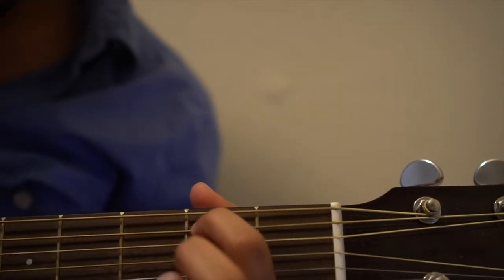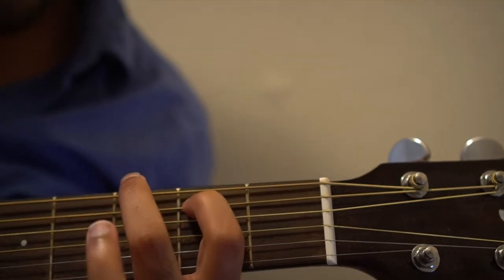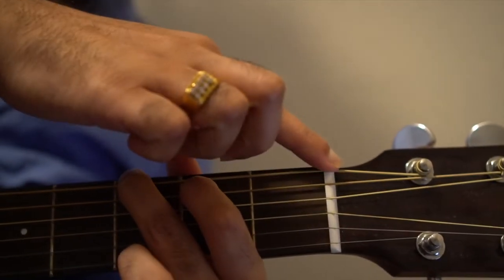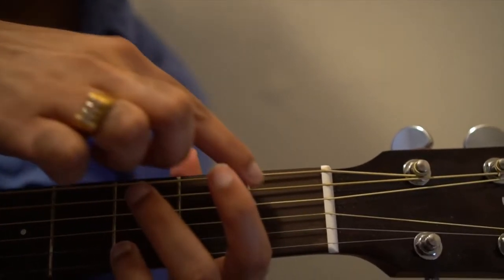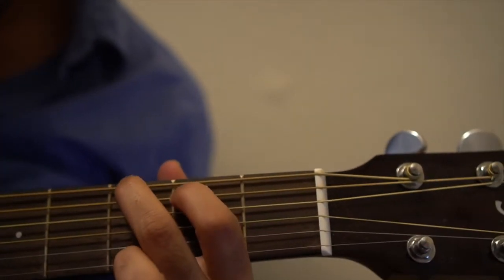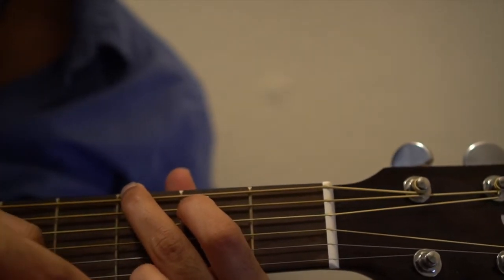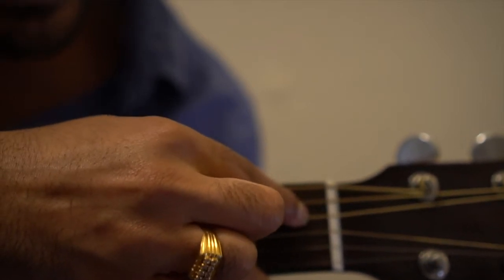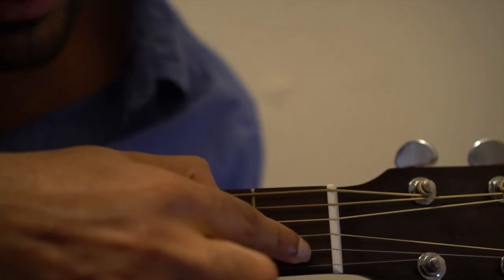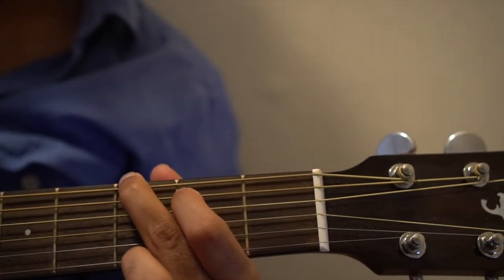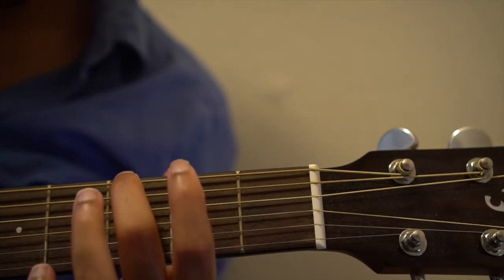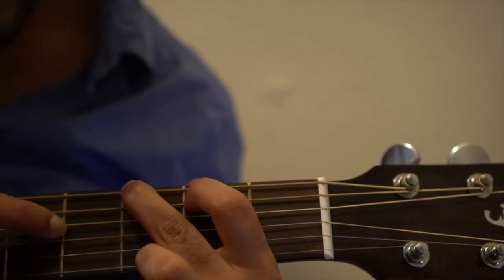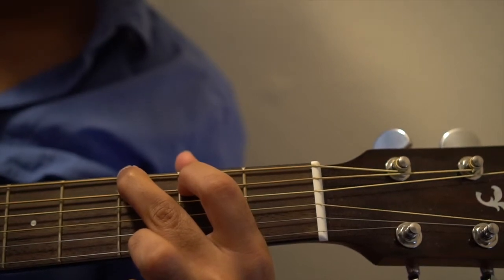Now for G chord: 1st finger, 5th string 2nd fret, 2nd finger 6th string 3rd fret, and 3rd finger 1st string 3rd fret. So this is G, this is B, these two are open - that's D and G. This is B and this is G. So we have G, B, D, G, B, G. This is the first variation friends.